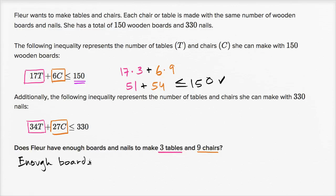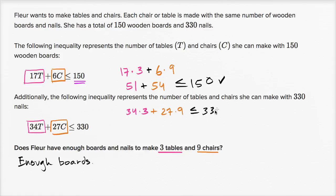Now let's see if she has enough nails. Three tables are going to require 34 nails per table times three tables — so 34 times three — that's the nails for all the tables. And then plus 27 nails per chair times nine chairs, so 27 times nine. We need to figure out: is this less than or equal to 330?